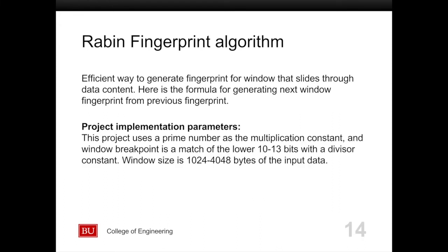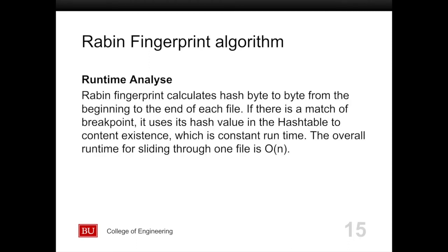For this project, we use a prime number as our multiplication constant. To determine a breakpoint, we use the match between the lower 10 to 13 bits of the fingerprint to a predetermined divisor. If there is a match, then we have a breakpoint, and the data between breakpoints will be the chunk. The window size is between 1,000 to 4,000 bytes. The runtime of the Rabin fingerprint algorithm is O(n), which is linear, since we slice through the whole data.